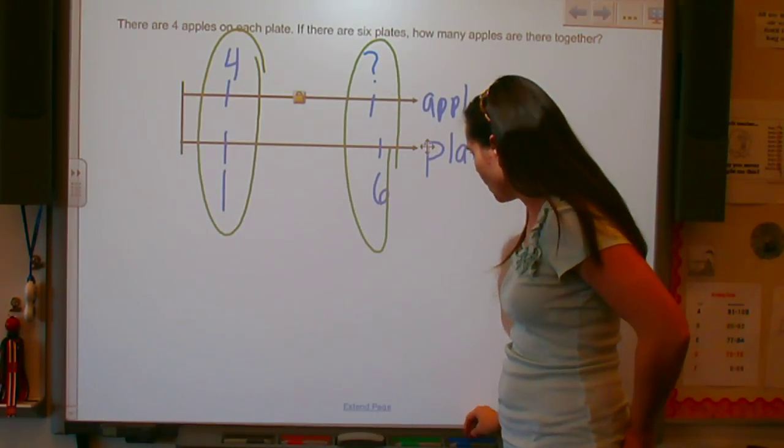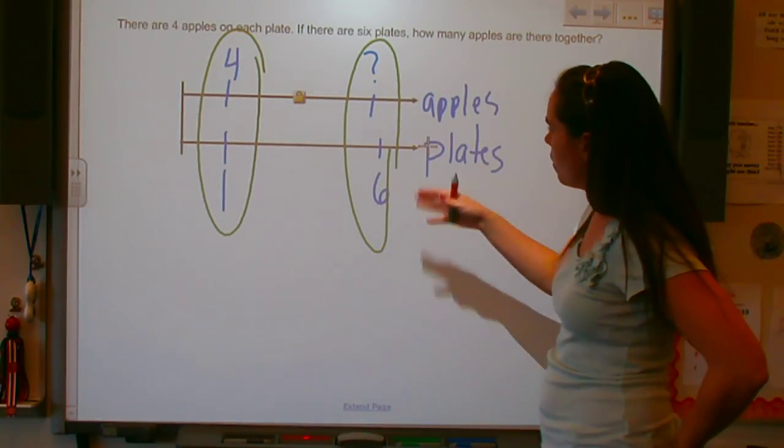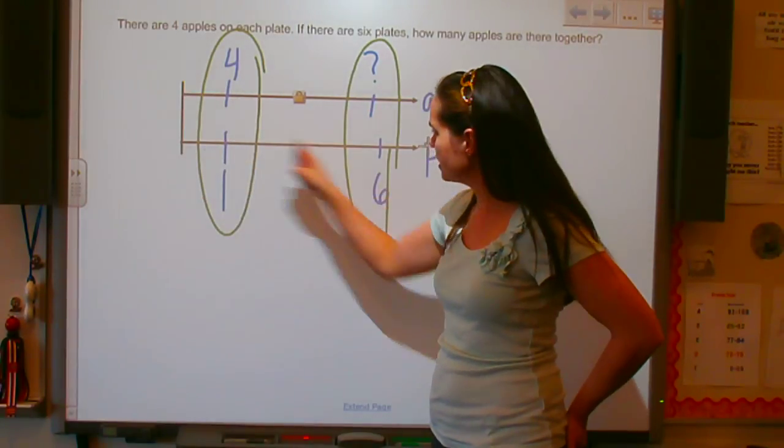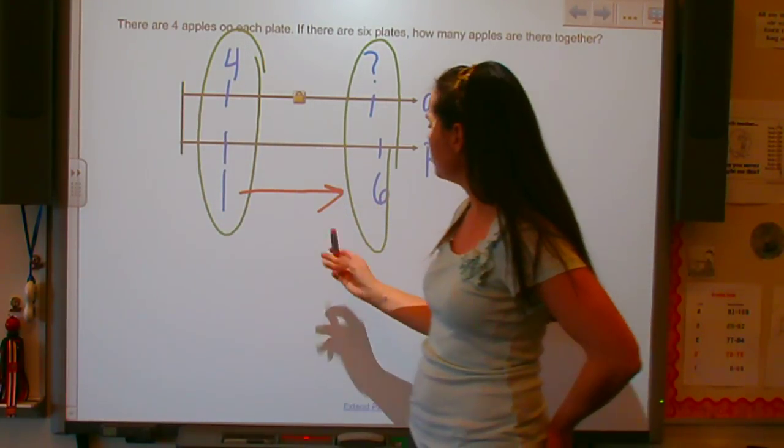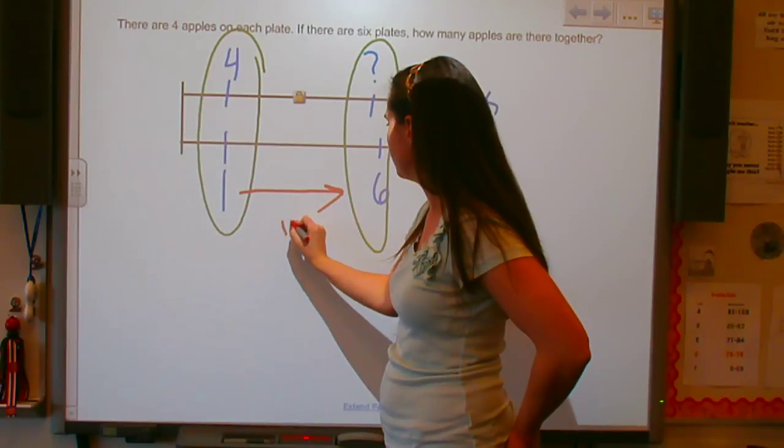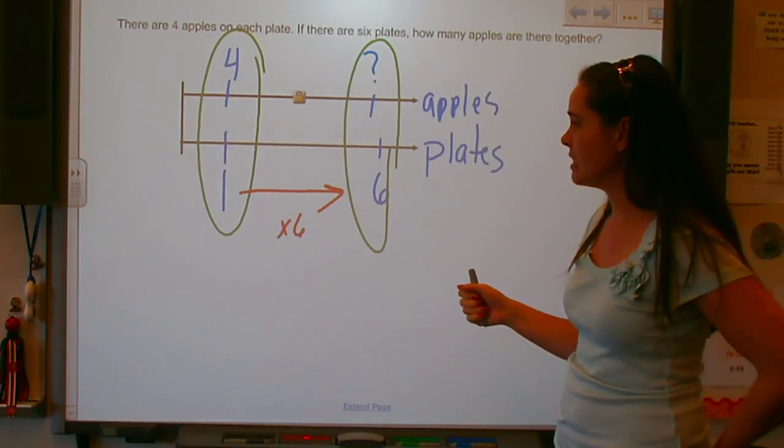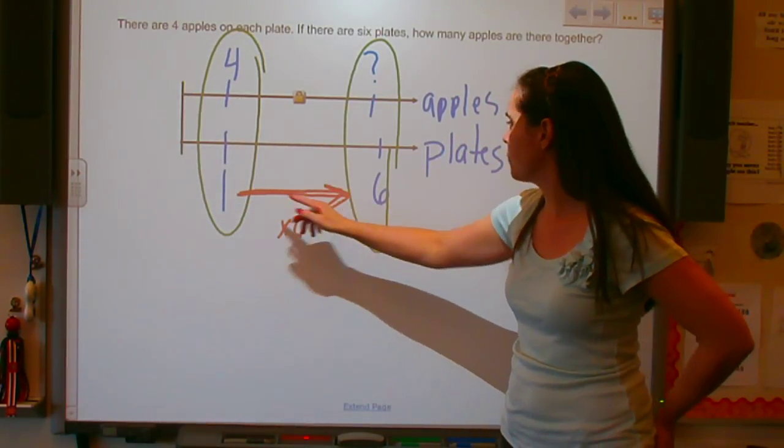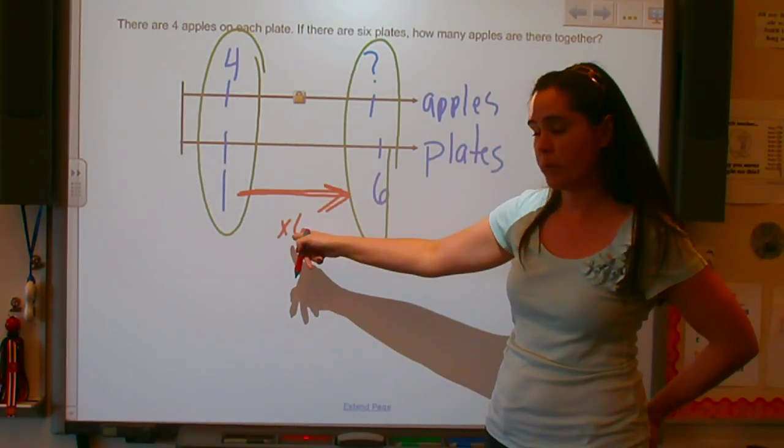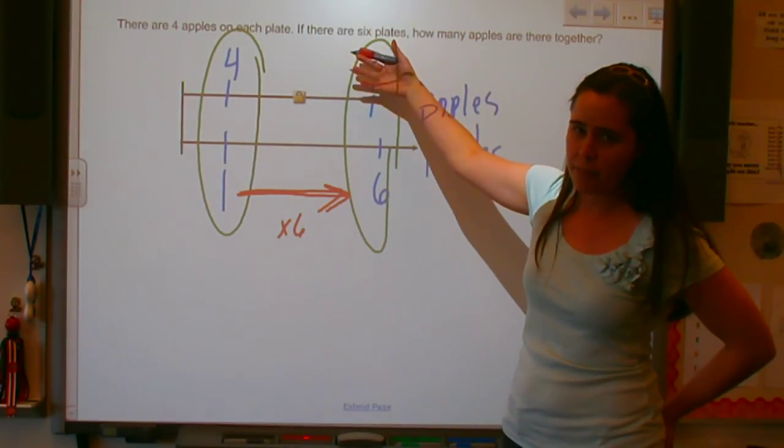We can look at this relationship and say, to get from one to six, I just need to say what is one times six? It is six because anything times one is itself. So to move on my number line from one to six, I just need to multiply by six. We do the same thing on the top line.